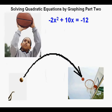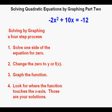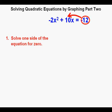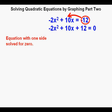The first equation we will solve today is negative 2x squared plus 10x equals negative 12. We follow the four-step process from part 1. Step 1 is to solve one side of the equation for zero. That is most easily accomplished by moving the negative 12 on the right side over to the left side, where it becomes positive. So we have negative 2x squared plus 10x plus 12 equals zero.